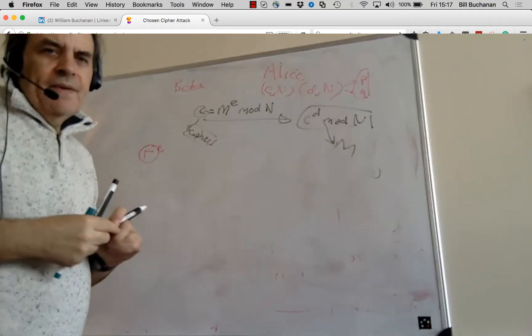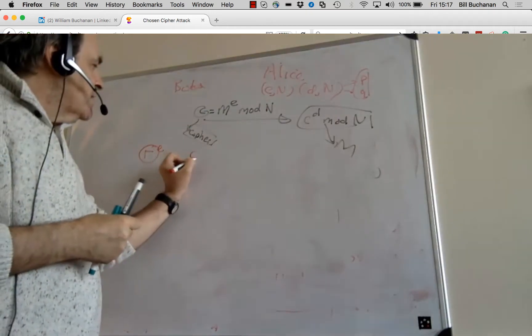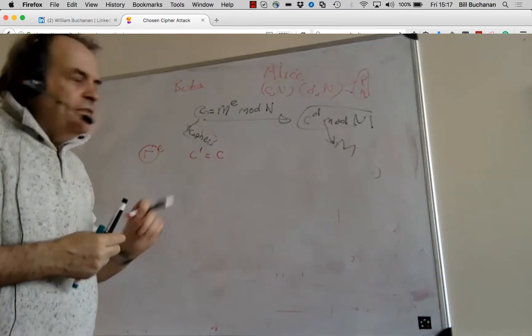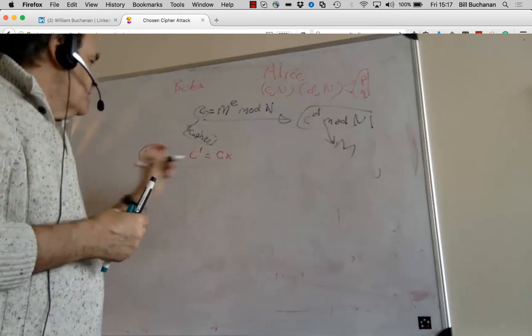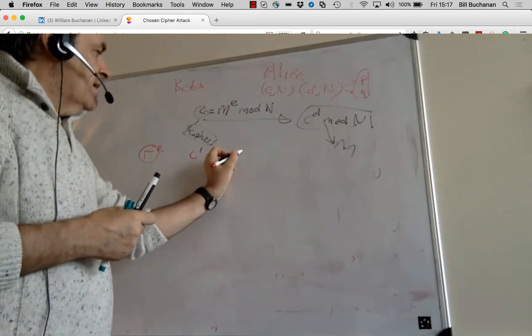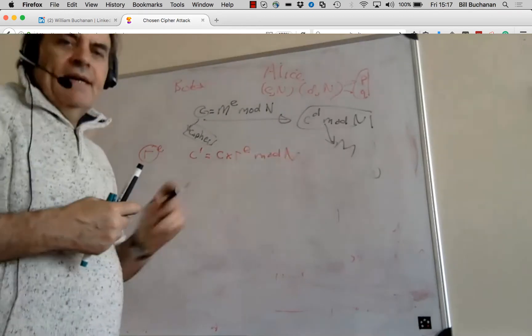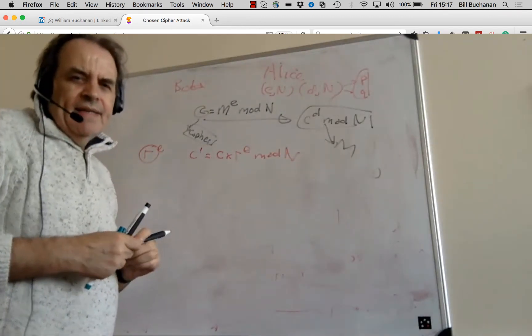And then what he does is he creates a new cipher, which is equal to the original cipher and then multiplies by R, the random number, to the power of E. And always we take mod N in there.